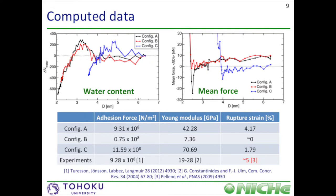Furthermore, from the mean force data, it is possible to compute mechanical properties like the adhesion force, the Young's modulus, and the rupture strain, and then compare them to experiments or previous simulations. We found a really good agreement between our simulations and atomic force microscopy experiments for the adhesion force in configurations A and C. However, the adhesion force for configuration B is far lower than what is observed experimentally, about 12 times lower. We attribute this discrepancy to the misorientation of silica chains at the particle surfaces. We also observe a lower Young's modulus for configuration B with respect to configurations A and C. For configurations A and C, the Young's modulus is close to what is found in simulation works for fully dense CSH, though values are higher than experimental ones. The Young's modulus for configuration B is lower than experimental values, again attributed to the misorientation of silica chains.